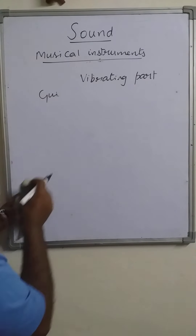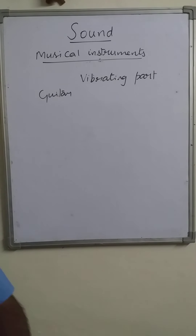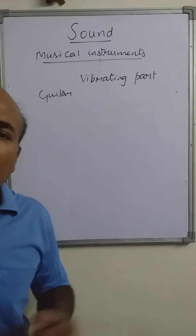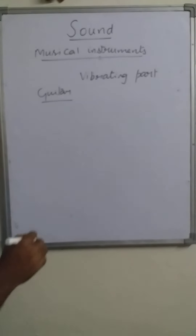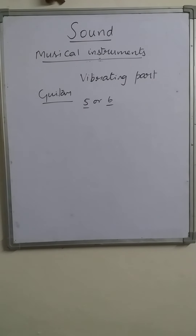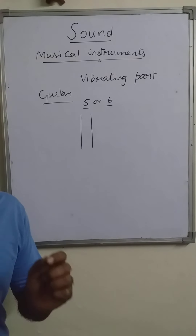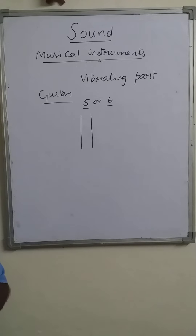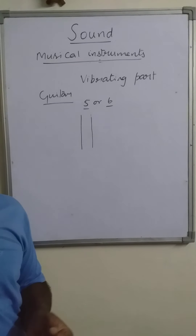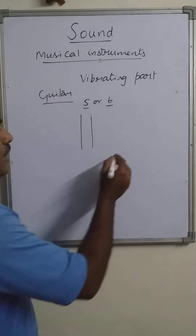It has a surface with many strings fixed stiffly. Around five or six strings are fixed on the rod, and all these strings are of different thickness — they are not the same in nature. The strings have different diameter or thickness and are arranged in sequence: the thickest string on one end and the thinnest string on the other end.